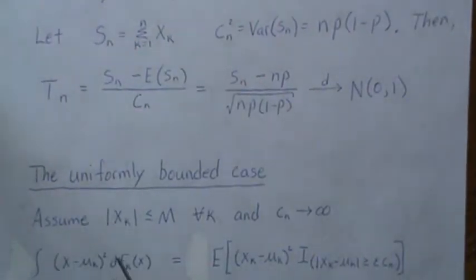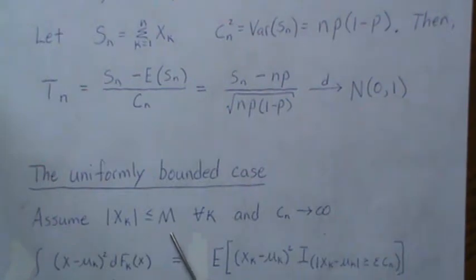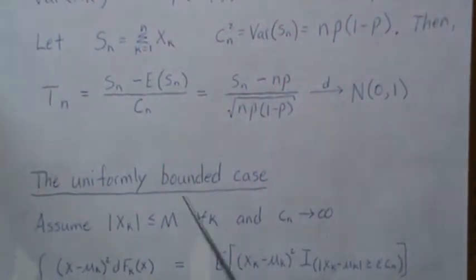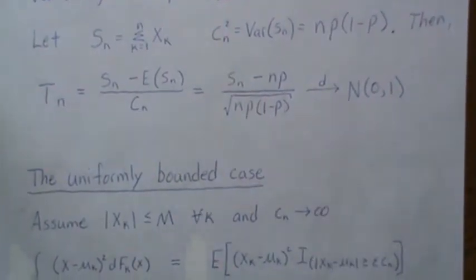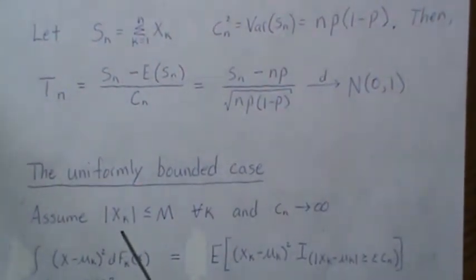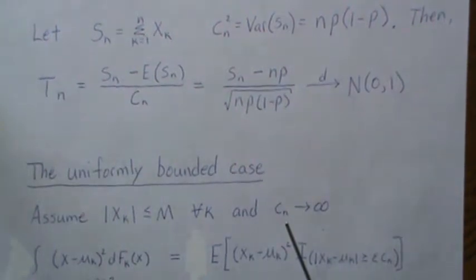Next we look at the uniformly bounded case, meaning the values of a random variable are bounded by some constant M. This case isn't always covered in the standard CLT but it is covered by the Lindenberg CLT. We assume the random variable is bounded for all k, and that the variance of the sum c_n squared goes to infinity.